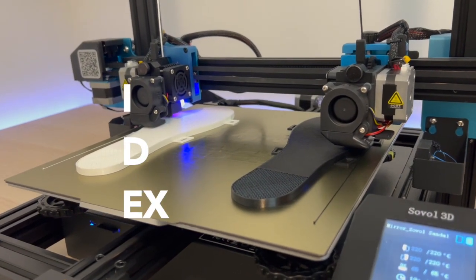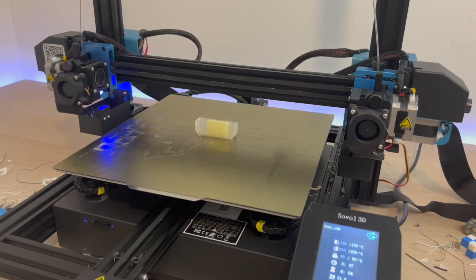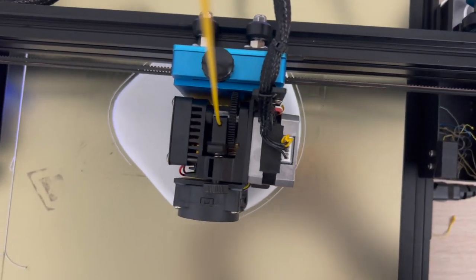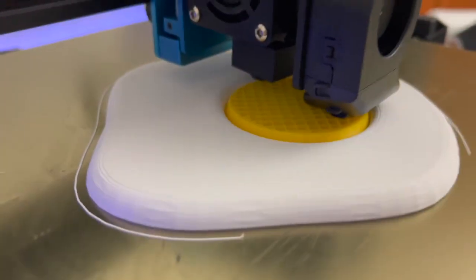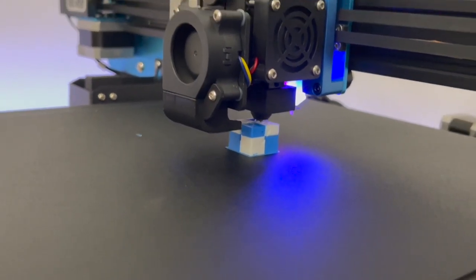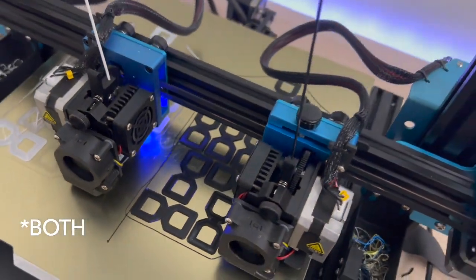IDEX stands for Independent Dual Extruders, which means you can switch between extruders or do dual color 3D prints, and it can also do multi-material 3D prints or even print with both extruders at the same time.